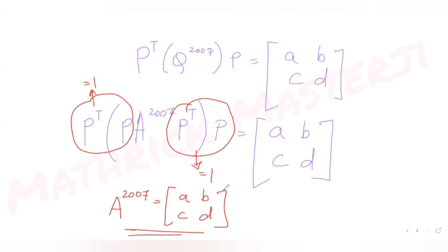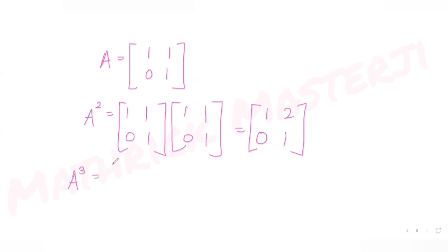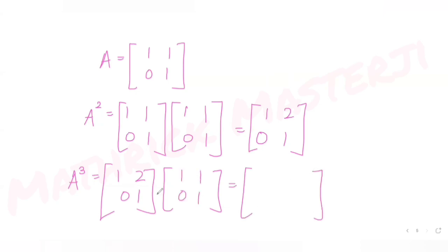Now let's find A^2007. Starting with A = [1,1; 0,1], we compute A² = [1,1; 0,1]·[1,1; 0,1] = [1,2; 0,1]. Then A³ = A²·A = [1,2; 0,1]·[1,1; 0,1] = [1,3; 0,1].